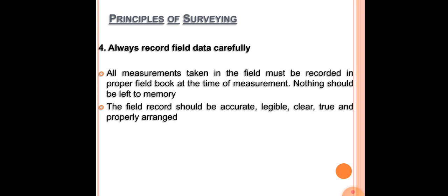The final principle is to always record the field data carefully. Whenever we take any measurements, all measurements taken in the field should be recorded in the correct place — you will have a field book. The time of measurement and the data being measured have to be entered accurately. Nothing should be left to memory; it has to be noted then and there itself. The field record should be accurate, legible so that any other person can read it, clear, and properly arranged — not scribbled in a haphazard way, but done neatly so that any third person will have a clear idea of what the measurements depict.